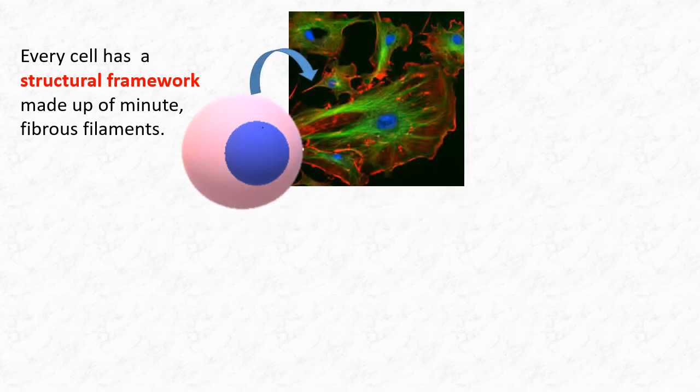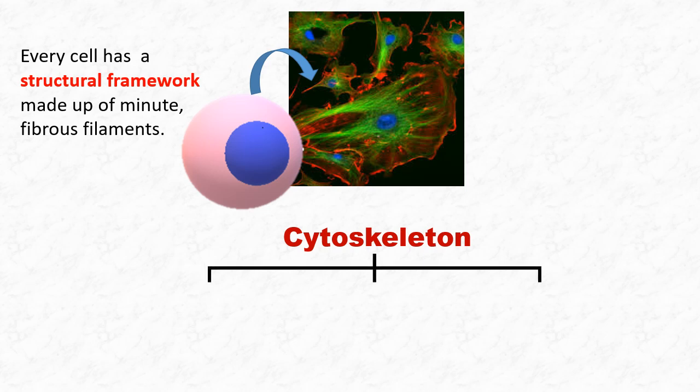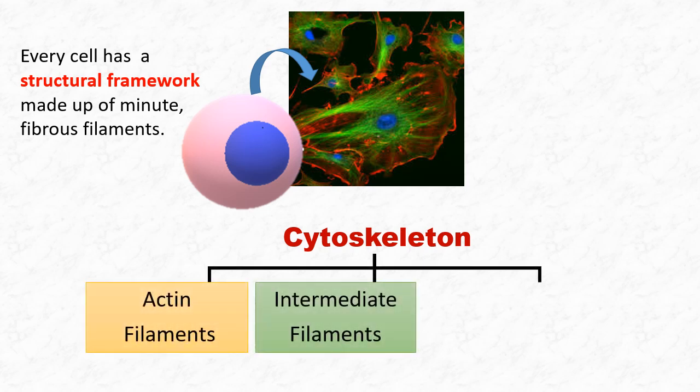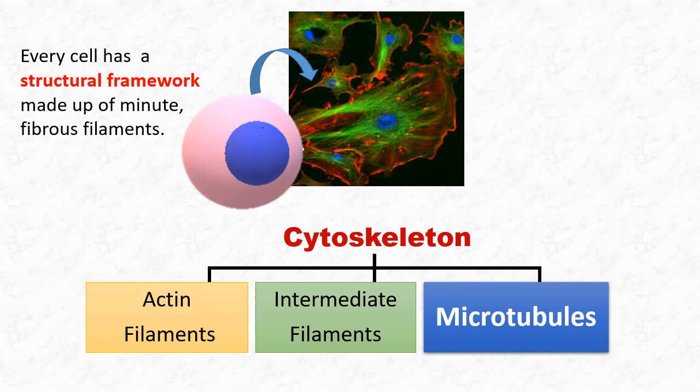Every cell has its own structural framework. It is made up of minute, fibrous, protein filaments. This structural framework of the cell is known as cytoskeleton. There are three families of protein filaments that together form the cytoskeleton of the cell. These are actin filaments, intermediate filaments, and microtubules.